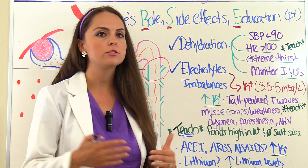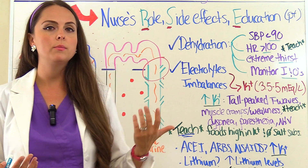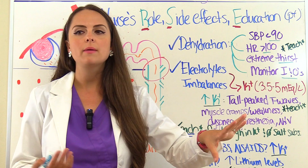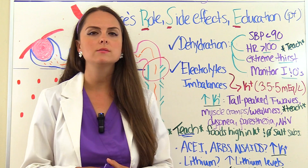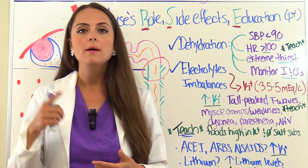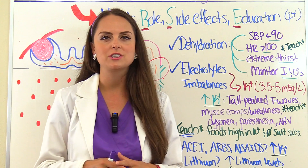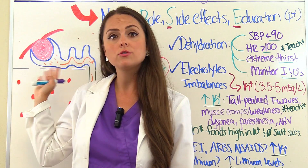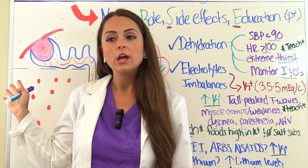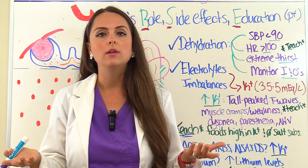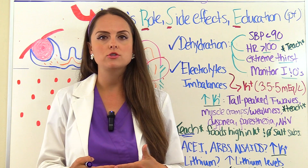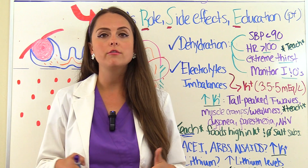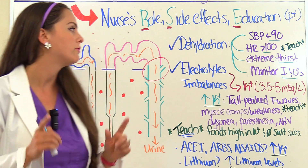We also want to monitor intake and output, making sure patients aren't putting out so much more fluid than they're taking in. We want to look at renal function — BUN and creatinine — which tells us how well the kidneys are filtering blood. If we dehydrate them too much, we can cause renal issues. Potassium sparing diuretics are contraindicated in patients who have renal failure.